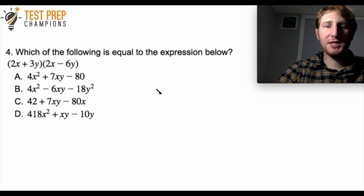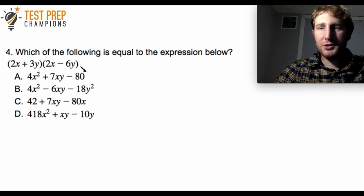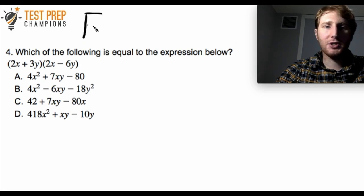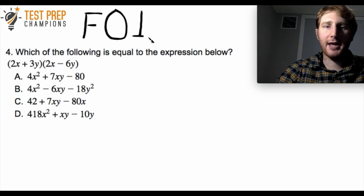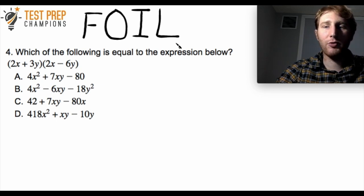The next question: which of the following is equal to (2x + 3y)(2x - 6y)? The trick here is what we call the FOIL method. F stands for First, O for Outer, I for Inner, and L for Last. I have other videos going more in-depth on FOIL, linked below. If you're not familiar with it, you're going to learn right now.